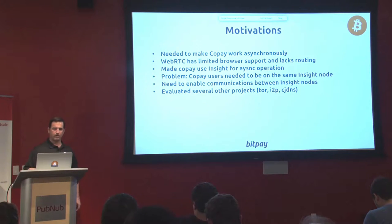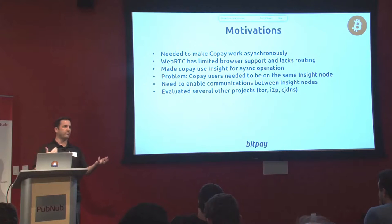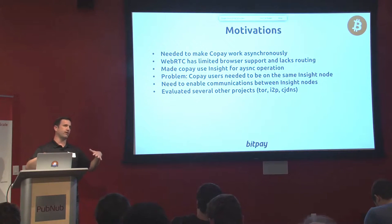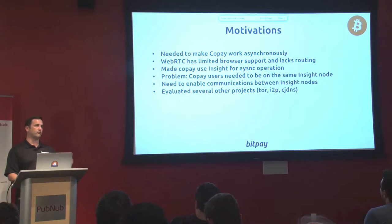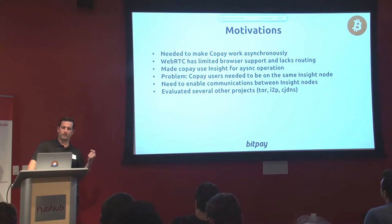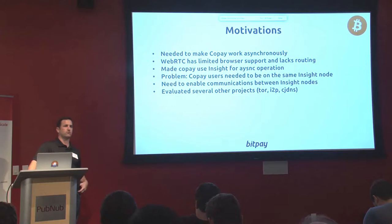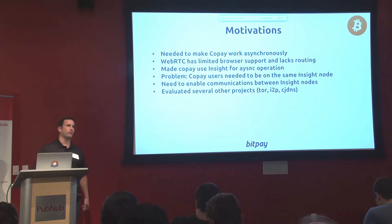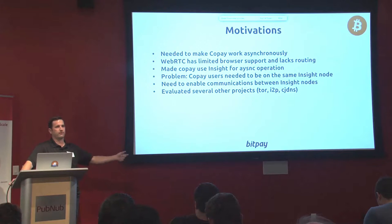Going back to the problem: now we're using Insight as a backend for Copay and we allow asynchronous operations. If you have five people participating in a multi-signature wallet, they don't all have to be online at the same time to create a transaction — they can do it asynchronously using Insight as a kind of rendezvous. But that would require everybody to be connected to the same Insight server. So what Foxtrot is, is a network that we can use with Insight that allows different Insight nodes to communicate with one another, so people using Copay can be on different Insight nodes — running their own on their desktop or in the cloud — but still form multi-signature wallets with other Copay users on different Insight servers.